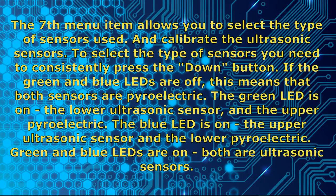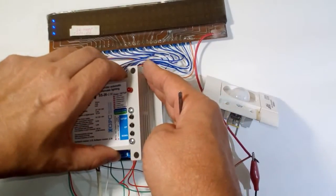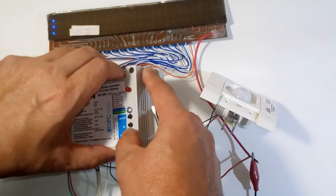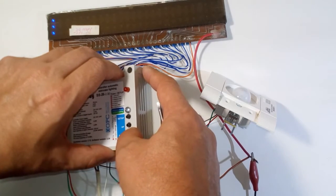Menu item 7 allows you to select the type of sensors used and calibrate the ultrasonic sensors. Press the down button to cycle through options: if the green and blue LEDs are off, both sensors are pyroelectric; green LED on means the lower sensor is ultrasonic and the upper is pyroelectric; blue LED on means the upper sensor is ultrasonic and the lower is pyroelectric; both LEDs on means both are ultrasonic. We now turn off both LEDs, selecting pyroelectric sensors.